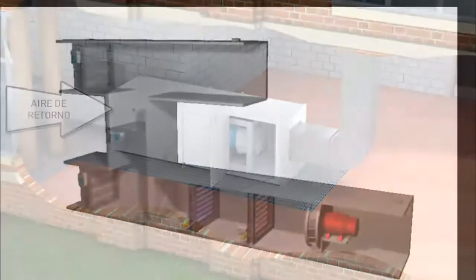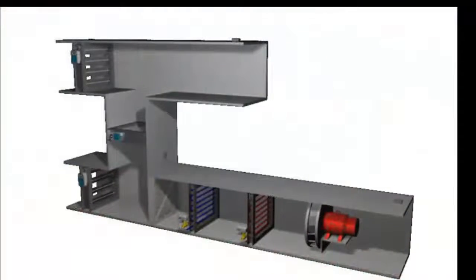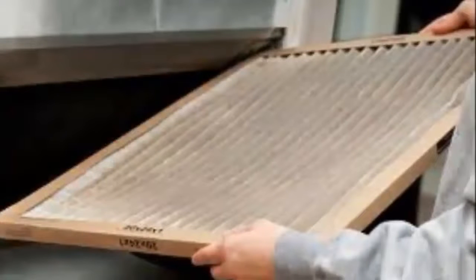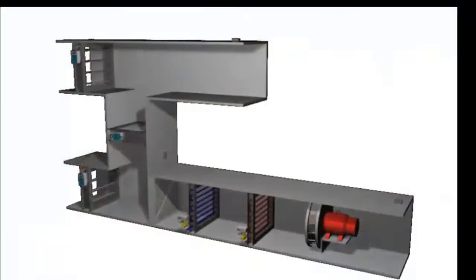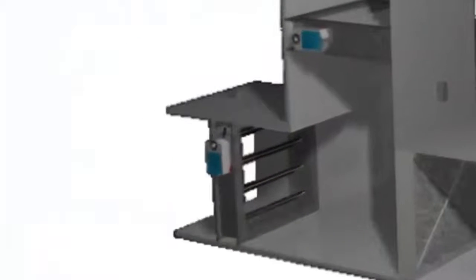2. The air handling unit has a mesh to prevent the entry of objects. 3. In the supply and return inlets, there are gates or dampers, metal sheets that can rotate and close to regulate the airflow.